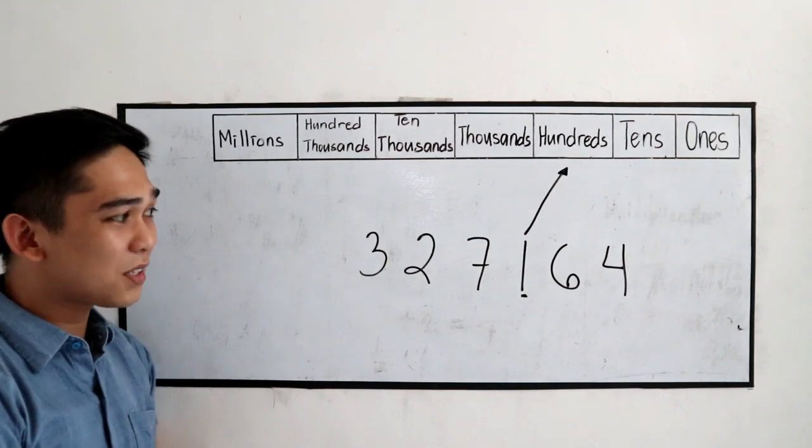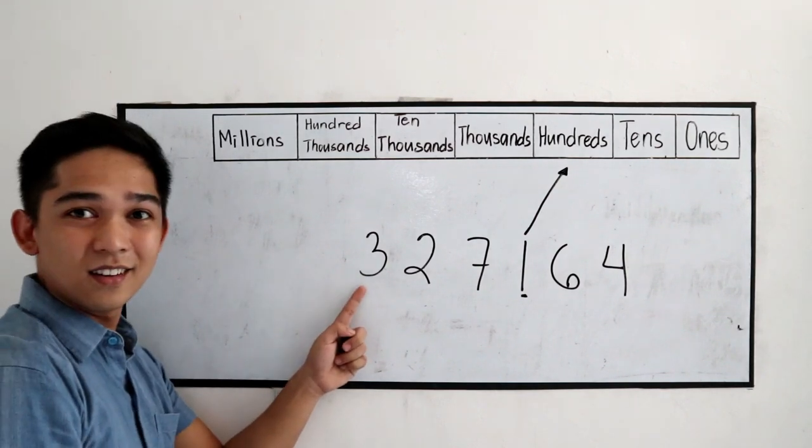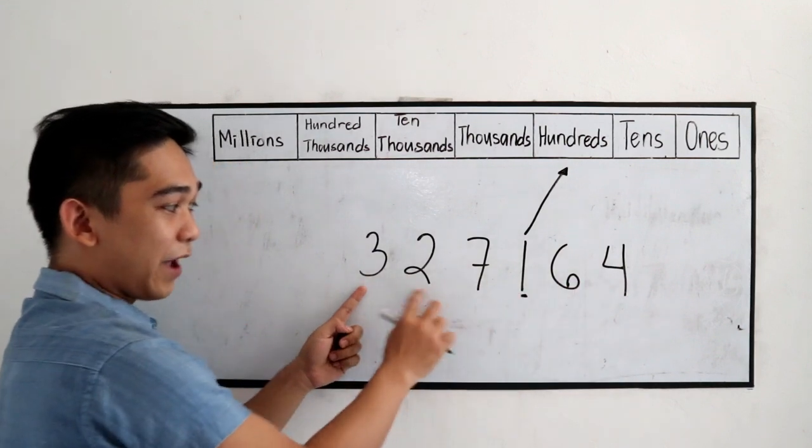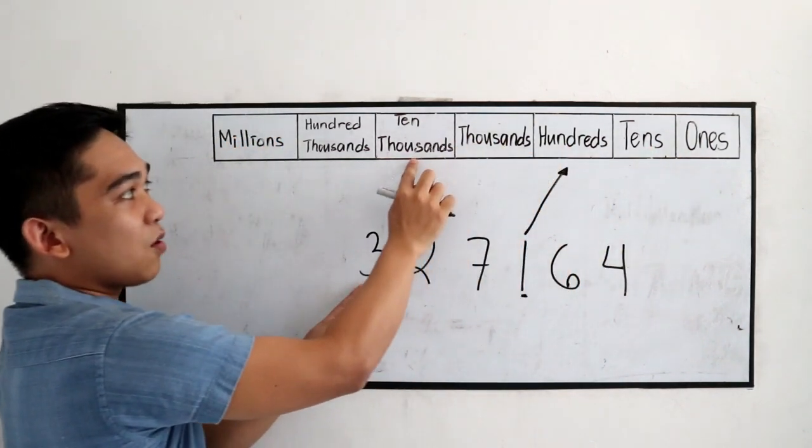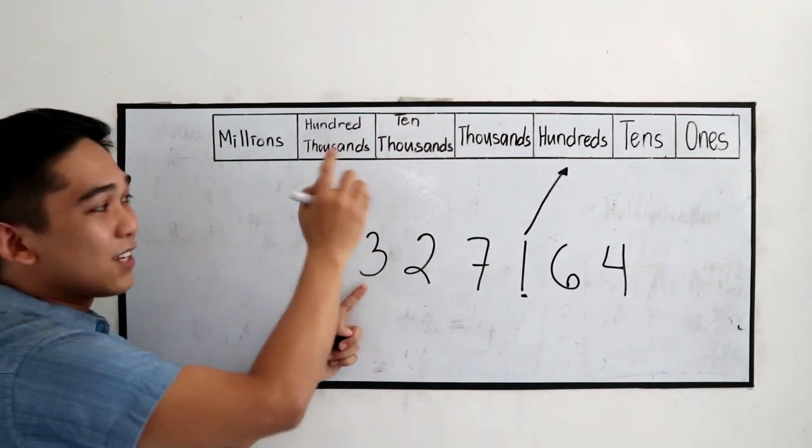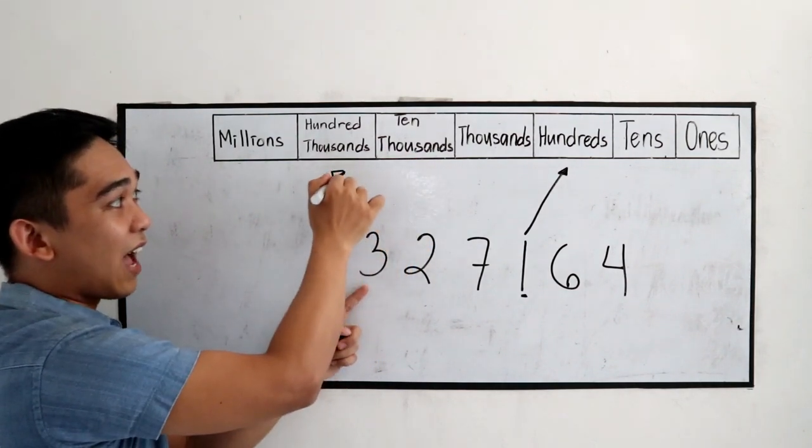How about what is the place value of the number 3? So, 1, 2, 3, 4, 5, 6. So, 1 stands, hundreds, thousands, tens thousands, hundred thousands. So, the place value of number 3 is hundred thousands.